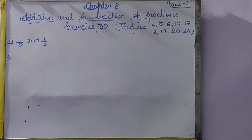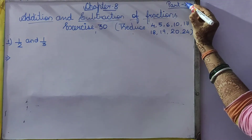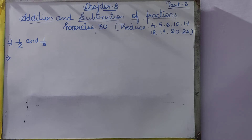Dear students, this is the third part of chapter number 8. Here we are going to start exercise number 30. In exercise number 30 there are 24 questions, in which you have to reduce questions 4, 5, 6, 10, 17, 18, 19, 20, and 24. The rest of the questions we are going to solve. Now coming to question number 1, that is 1 by 2 and 1 by 3.